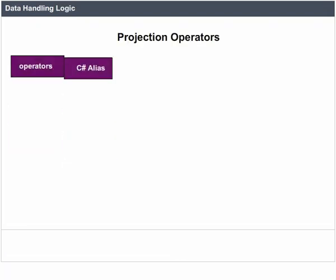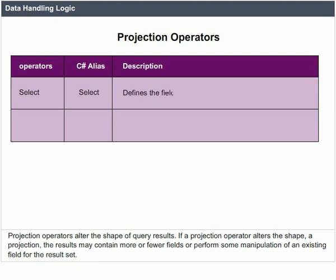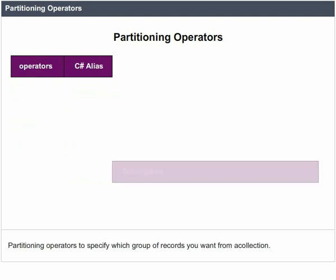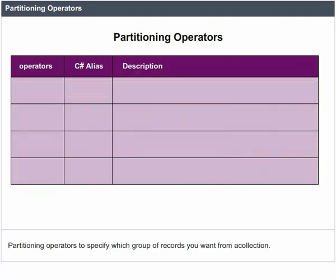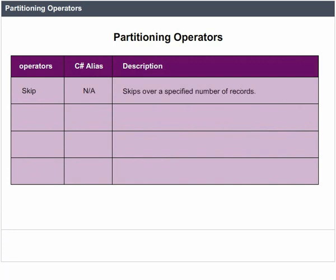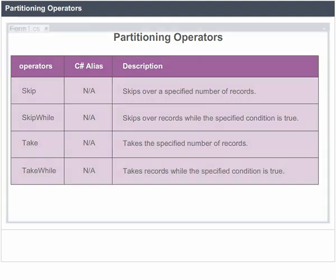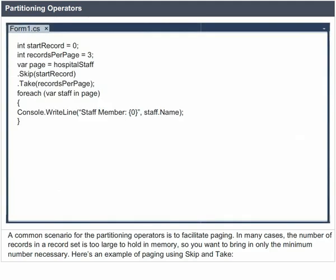Projection Operators alter the shape of query results. If a projection operator alters the shape of a projection, the results may contain more or fewer fields or perform some manipulation of an existing field. Select defines the fields or properties to return; SelectMany flattens a multi-level hierarchy to access results. Partitioning Operators specify which group of records you want from a collection: Skip skips over a specified number of records; SkipWhile skips over records while the specified condition is true; Take takes the specified number of records; TakeWhile takes records while the specified condition is true. A common scenario for partitioning operators is to facilitate paging using Skip and Take.